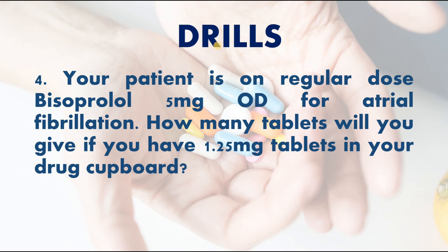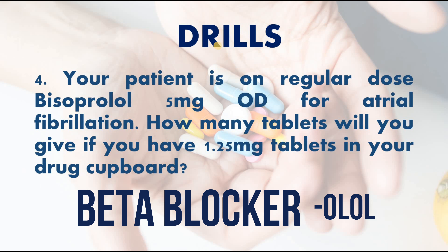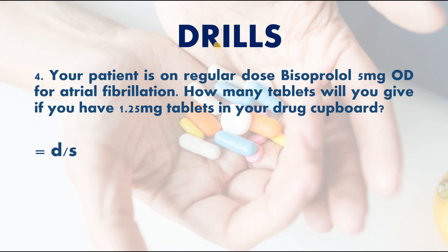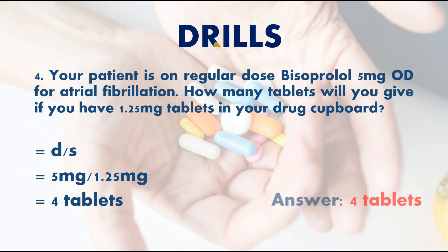Next: your patient is on regular bisoprolol 5 milligrams OD for atrial fibrillation. How many tablets will you give if you have 1.25 mg tablets in your drug cupboard? Bisoprolol is a beta blocker, and OD means once a day. Using the formula: desired dose divided by stock — 5 mg ÷ 1.25 mg = 4 tablets.